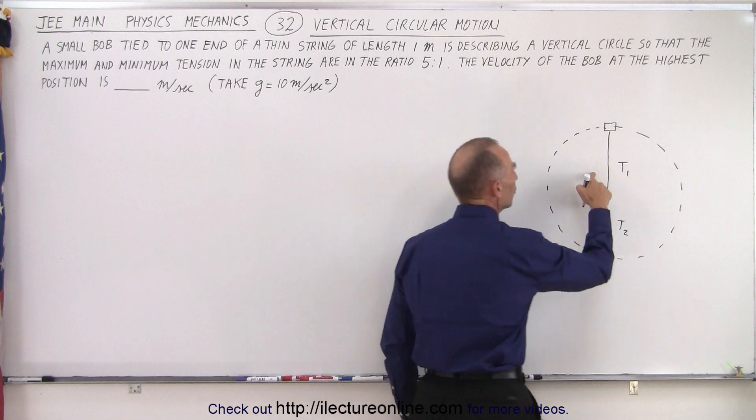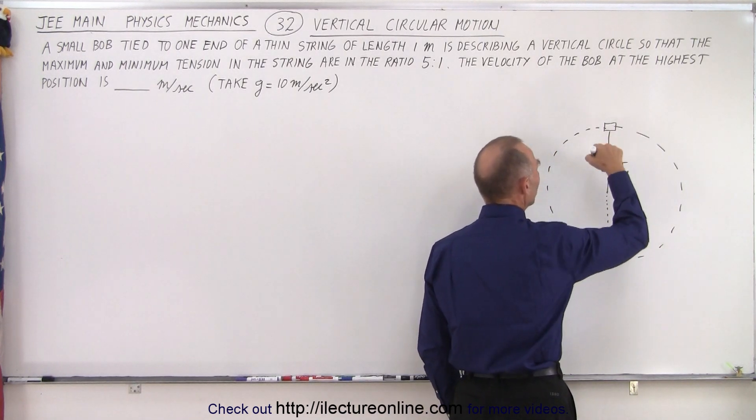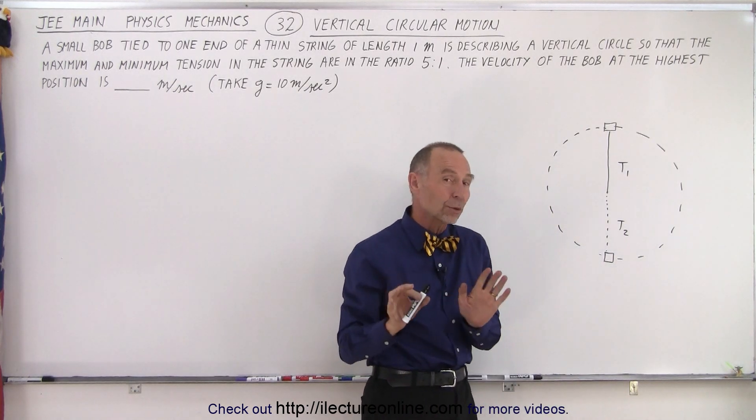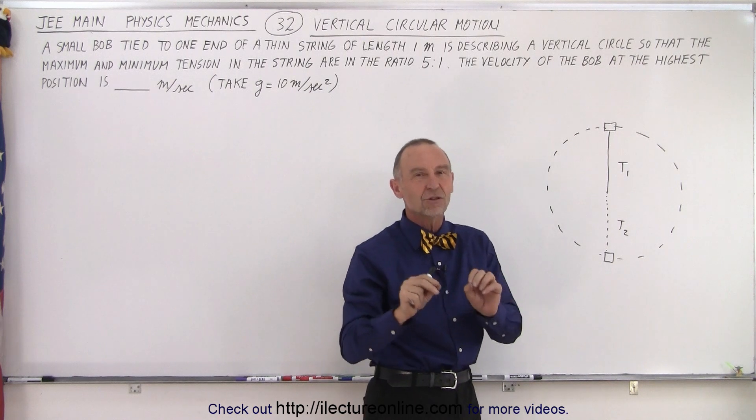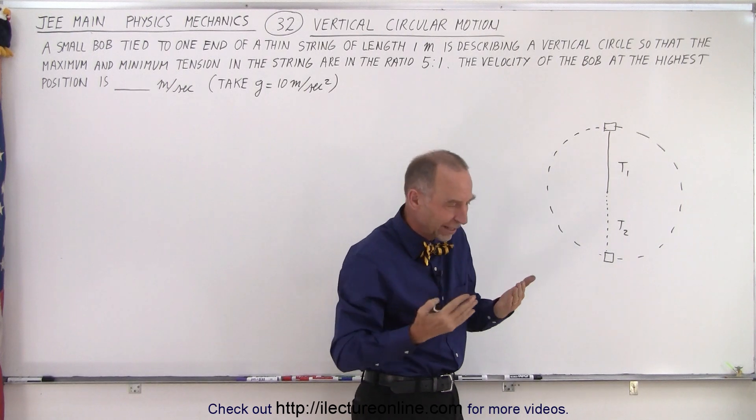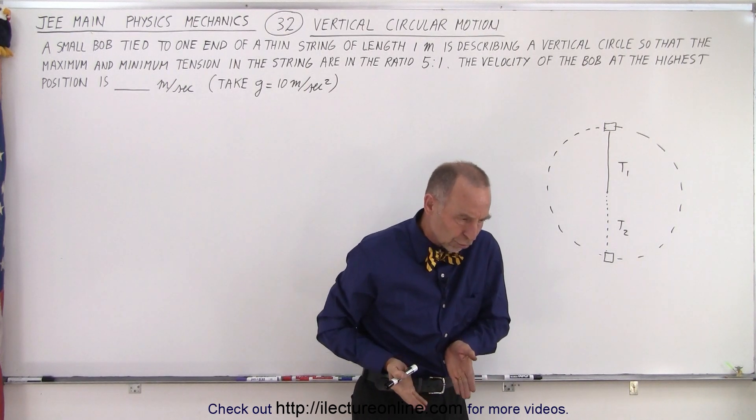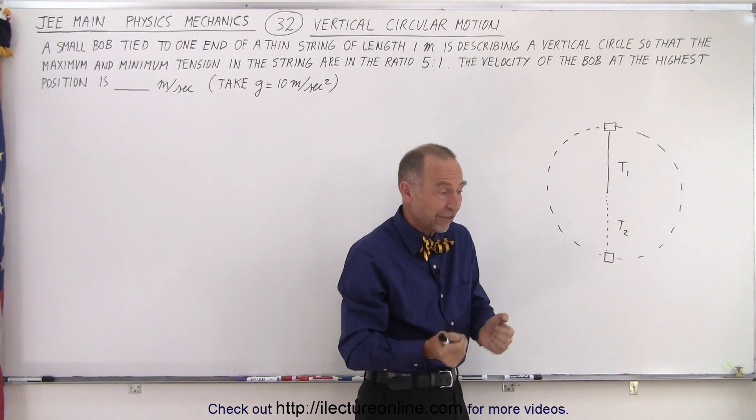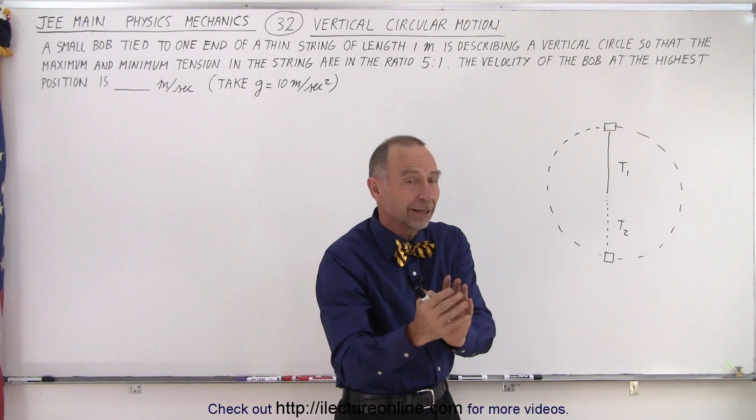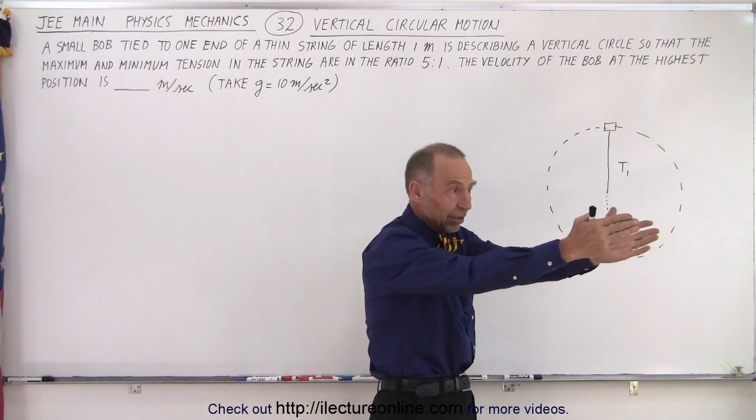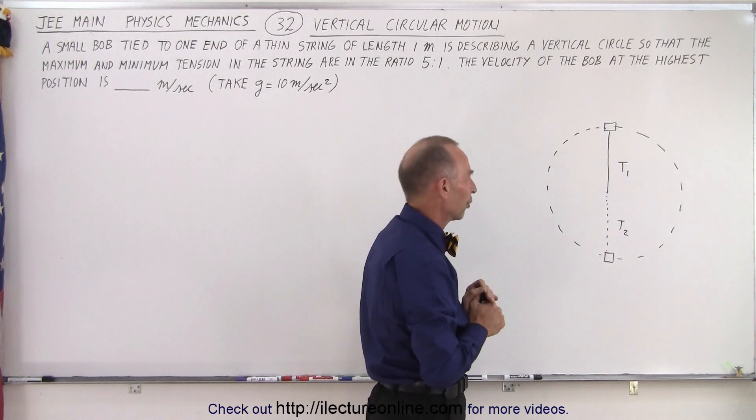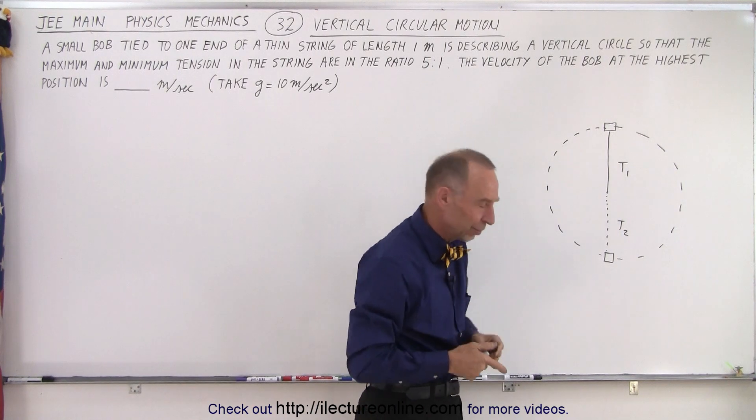Now at this point notice that the bob will have what we call centrifugal force. I like to work with centrifugal force rather than centripetal force because it makes it easier to visualize things. Now centrifugal force is a fictitious force. It's what you feel when you tend to go around in a circle. Let's say you're driving a car pretty fast and the driver makes a sharp left turn. It feels like you've been pushed to the right, but all you're doing is simply following Newton's first law trying to go straight. That's that fictitious centrifugal force. So I'm going to use that to help us work things out.